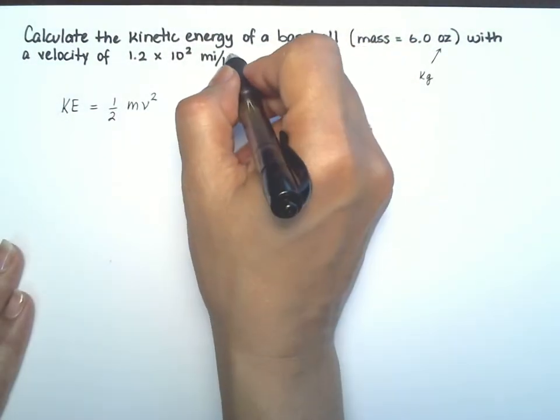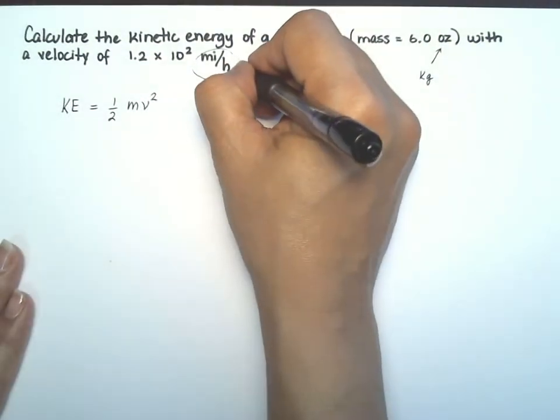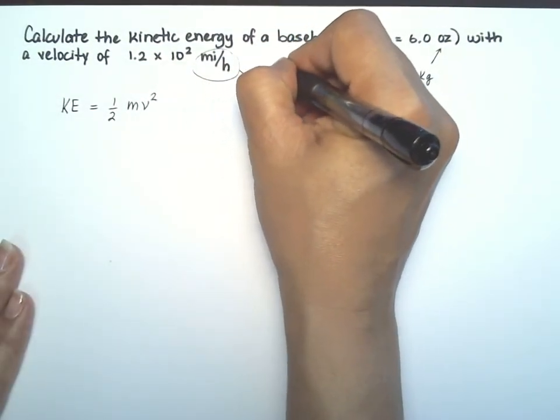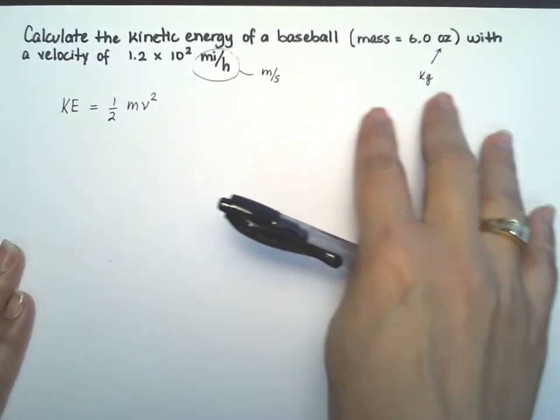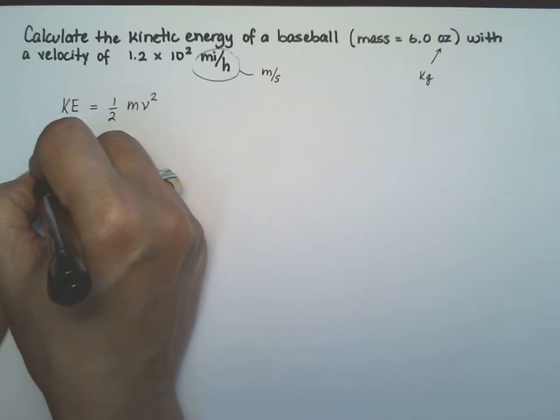And they gave us this in miles per hour. We're going to need to change it to meters per second. So those are the two most complicated things - those conversions. So let's do the mass first.